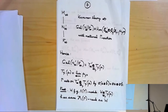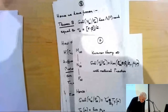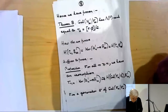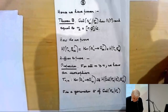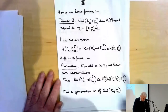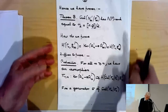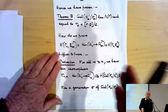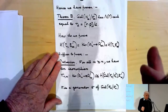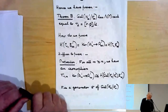Therefore we have proved Theorem B: the Galois group of N∞' over F∞ has Λ-rank equal to r_2, which — because the base field F must be purely imaginary — is the degree of F over Q divided by two.